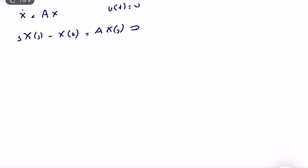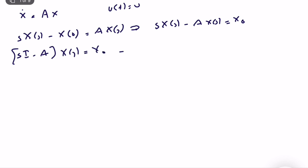If we organize: sX(s) minus AX(s) is equal to x₀, which gives us (sI minus A)X(s) equals x₀. As you can see, this expression is very familiar — it's the algebraic equation. So X(s) is equal to (sI minus A) inverse times x₀. This is the solution in the Laplace domain.